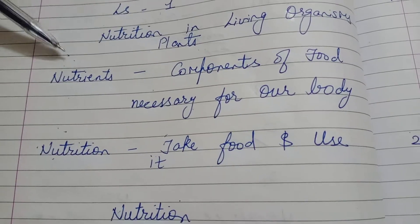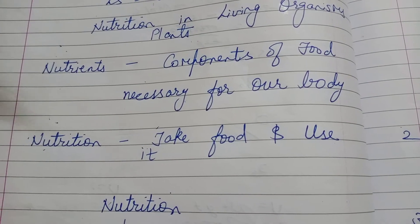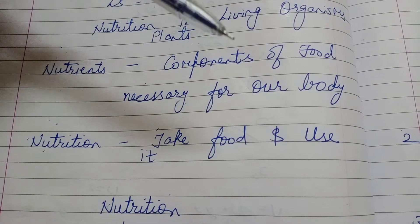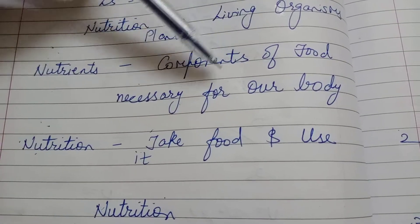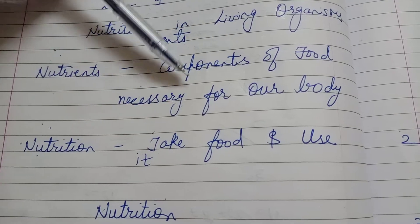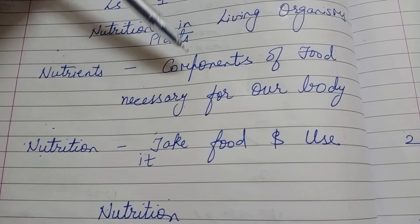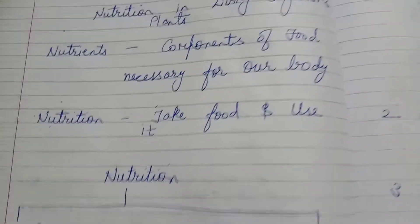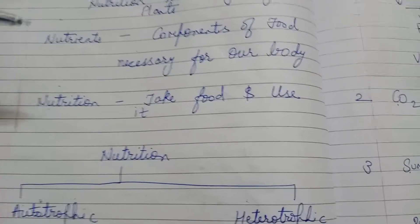First of all, what are nutrients? Nutrients are the components of food which are necessary for our body. For example, vitamins, proteins, carbohydrates, fats, and all which you have studied in your previous class.